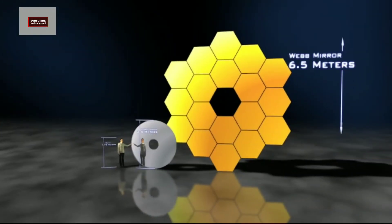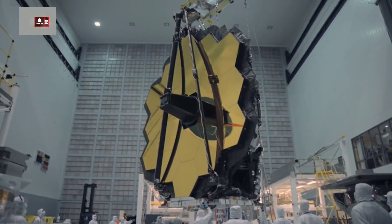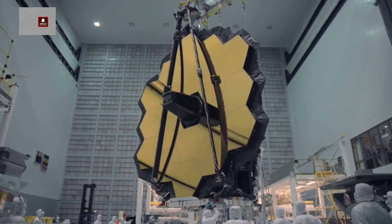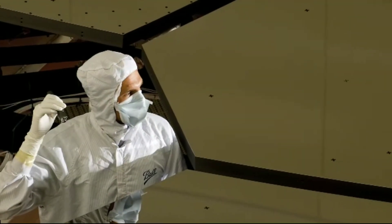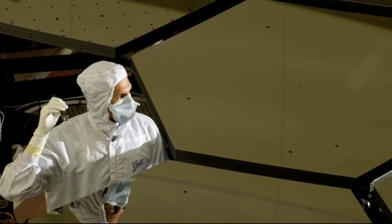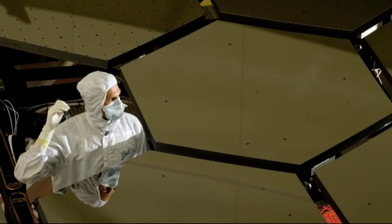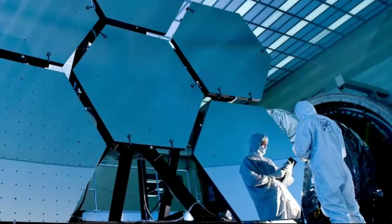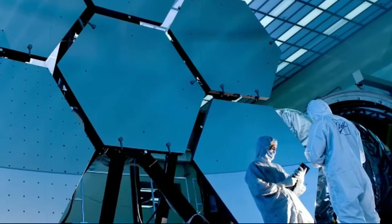This is a 6.5 meter primary mirror that will collect seven times more light than Hubble's mirror. Webb is made up of 18 mirror segments that will act as one. The mirror segments will be folded up and put inside the rocket for launch.